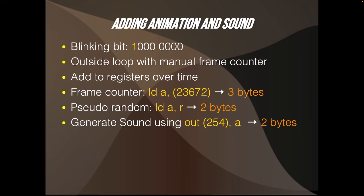Let's talk about adding animation and sound. We can use the blinking bit — the top bit in the color attribute — to make our colors blink. We can use an outside loop with a manual frame counter, though it's quite expensive. We can add values to unused registers over time for a kind of animation. We can read the frame counter directly with LD A, (23672), costing 3 bytes. We can use pseudo-random by loading A with R — just 2 bytes. And to generate sound, we use OUT 254, A — also 2 bytes.